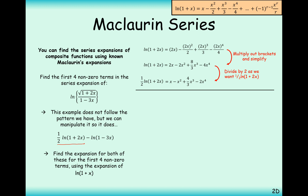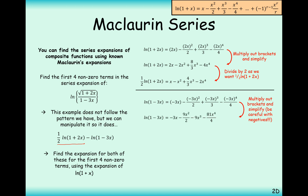Now the second part: ln(1-3x). In this case we're replacing x with -3x, so each x in the formula booklet formula for ln(1+x) turns into -3x. Expand the brackets really carefully — watch out for double negatives, triple negatives, and four negatives. Make sure you're very careful at this stage, and we get this expression.